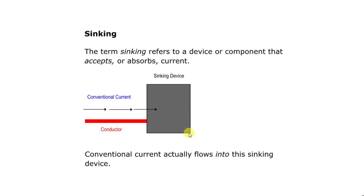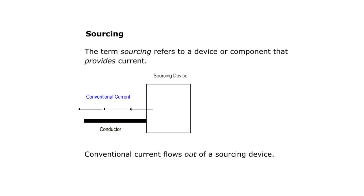Sinking means whenever any device is absorbing current, or if the direction of current is inward to that device, it is called a sinking device. The conventional current flows into the sinking device because it is absorbing the current. Similarly, sourcing means the device acts as a source of current, providing current to another device. The conventional current flows out of the sourcing device.